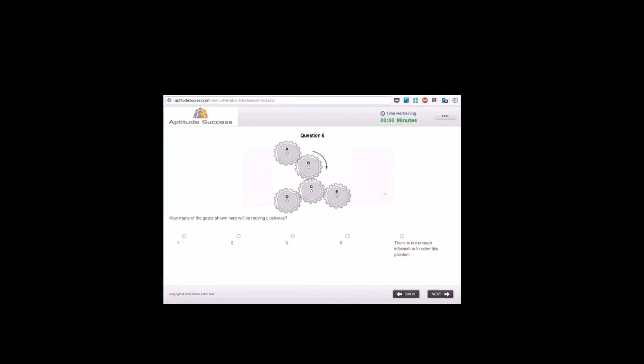In this question, we're being asked how many of the gears shown here will be moving clockwise. To figure this out, we need to find out what information we've got available. The only information we've got available at the moment is that gear B is rotating in a clockwise direction.